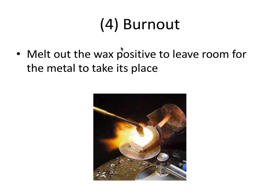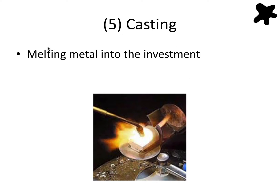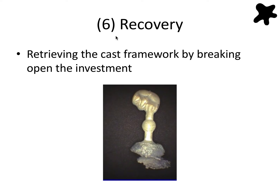Step four is called burnout. This is where we melt out the wax positive to leave room for the metal to take its place, leaving a void in the investment material where the waxed-up crown and sprue were. Step five is casting, where we melt metal into the investment — the sprue left a path for metal to flow into that void. Step six is recovery, where we retrieve the cast framework by breaking open the investment. Now we have our positive reproduction, but instead of wax, it's made in gold.